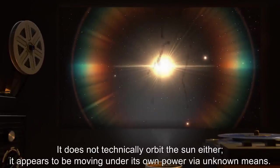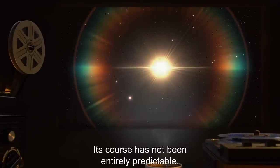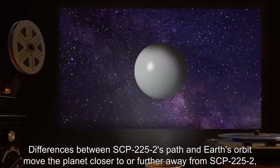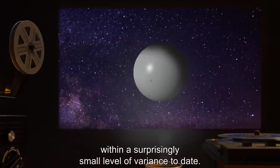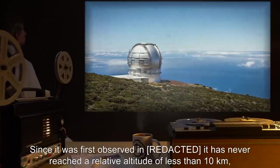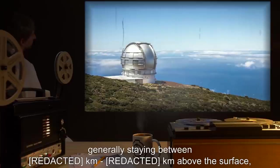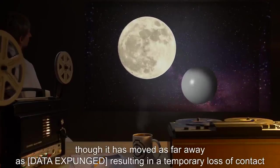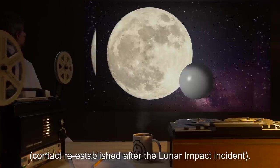It appears to be moving under its own power via unknown means. Its course has not been entirely predictable. Differences between SCP-225-2's path and Earth's orbit move the planet closer to or further away from SCP-225-2 within a surprisingly small level of variance. To date, since it was first observed, it has never reached a relative altitude of less than 10 kilometers, generally staying between kilometers and kilometers above the surface, though it has moved as far away as [DATA EXPUNGED], resulting in a temporary loss of contact. Contact re-established after the lunar impact incident.